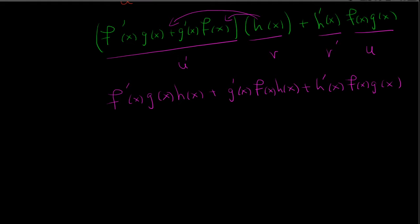Notice that f, g, and h appear in all three terms. In the first term, we only take the derivative of f and leave g and h alone. In the second, we take the derivative of g and leave f and h alone. In the last, we take the derivative of h and leave f and g alone. This is similar to the two-function product rule — you only take the derivative of one function at a time, so with three functions we get three terms.